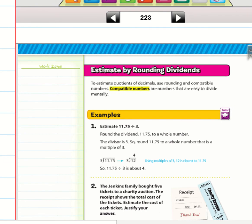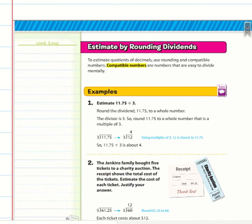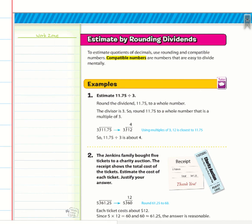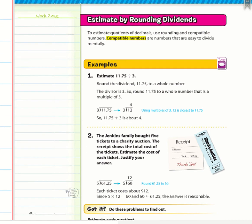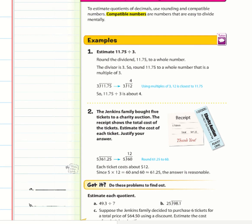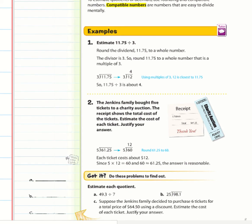To estimate quotients of decimals, use rounding and compatible numbers. Compatible numbers are numbers that are easy to divide mentally. In Example 1, we have to estimate 11.75 divided by 3.